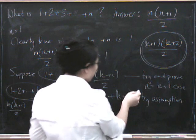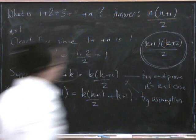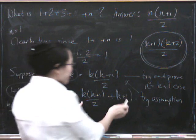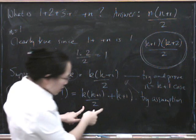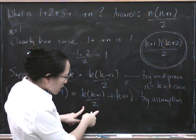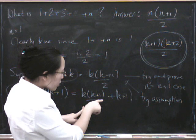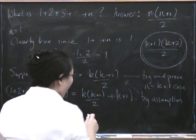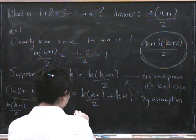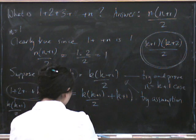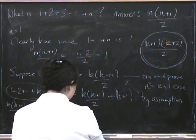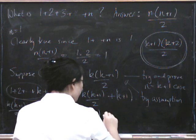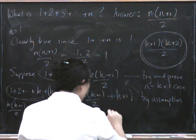Okay, the assumption that we had there. So now we've got to try and show that this thing equals that thing. So the thing we should probably do first is put it all over the same common denominator. So if we put it all over the common denominator of 2, we get k times k plus 1 plus 2k plus 2, all over 2.